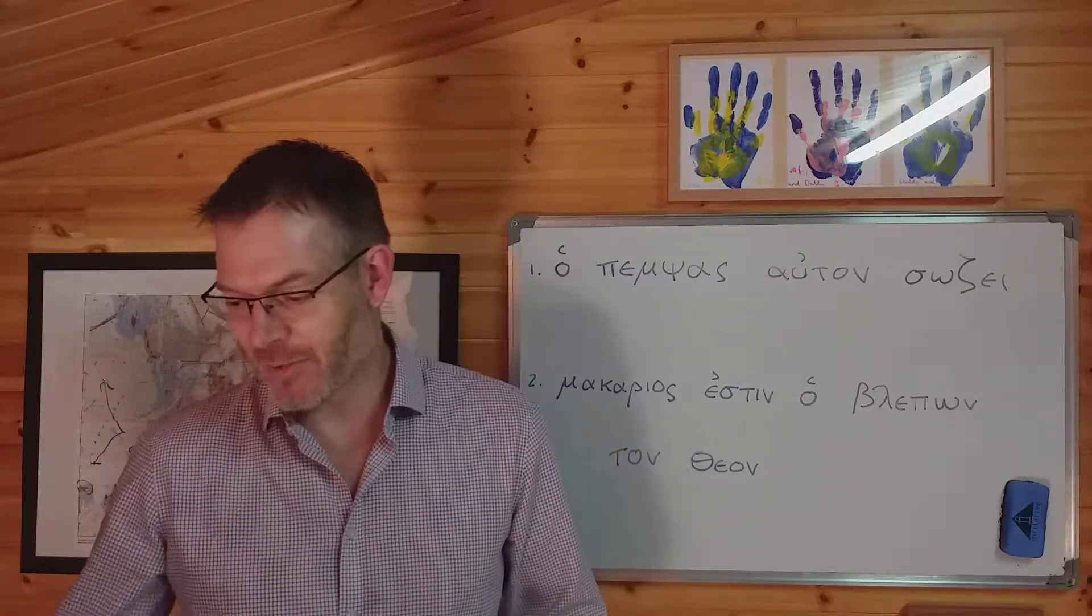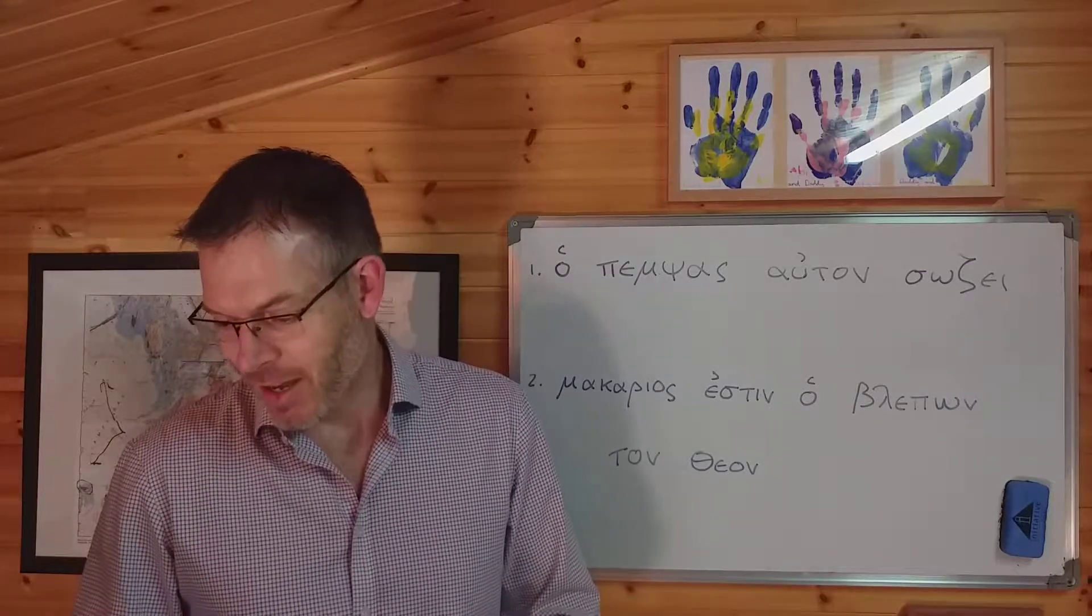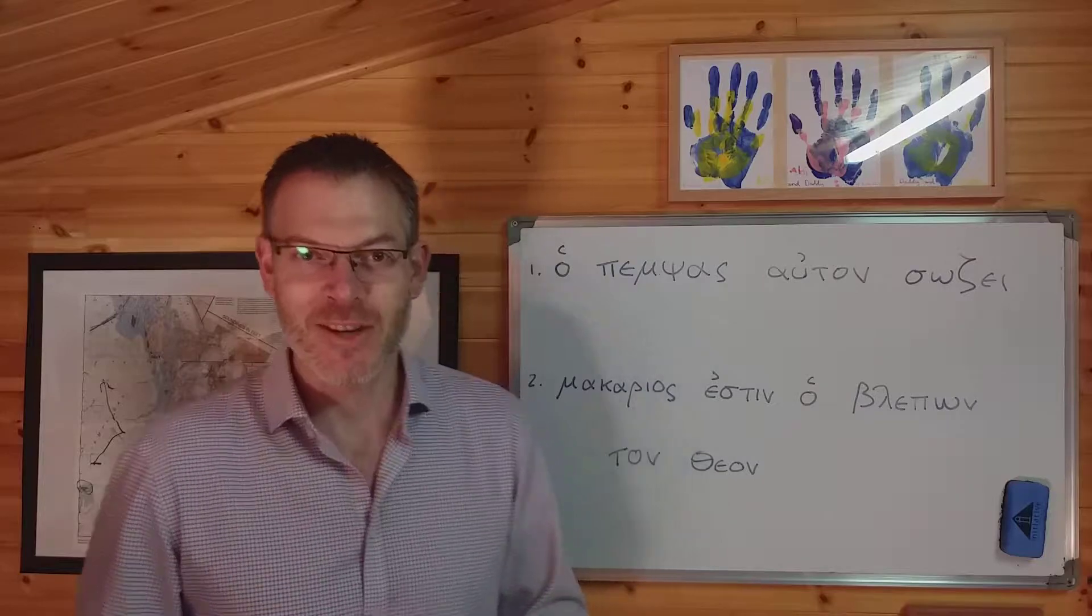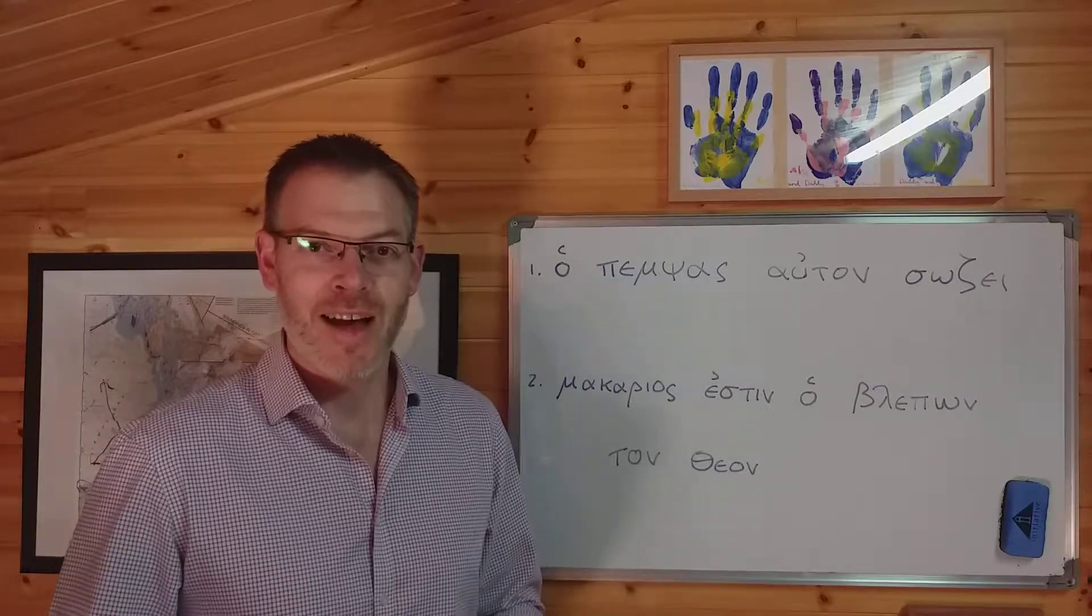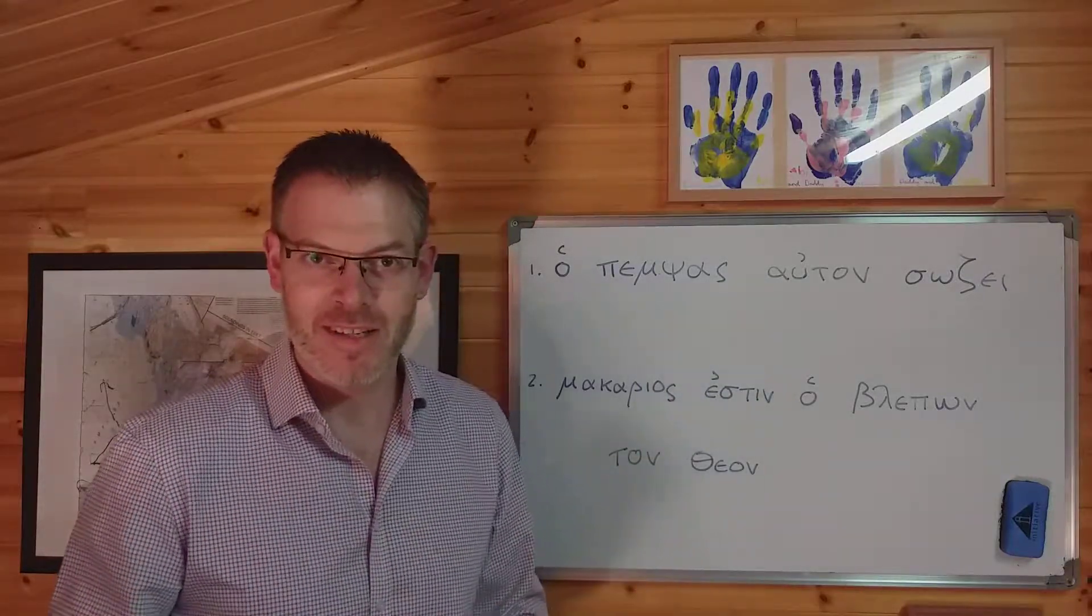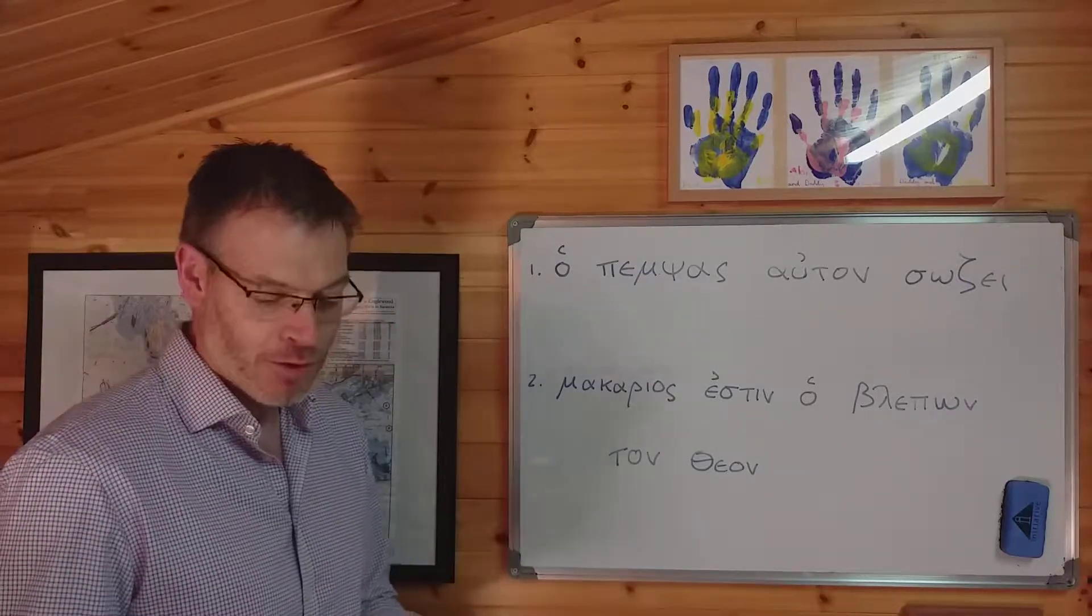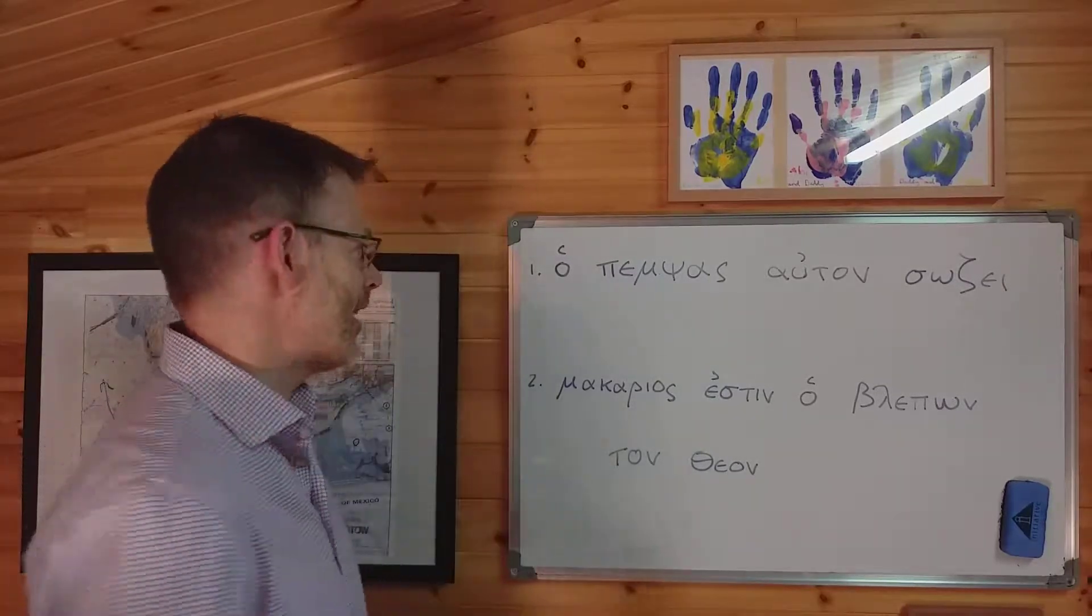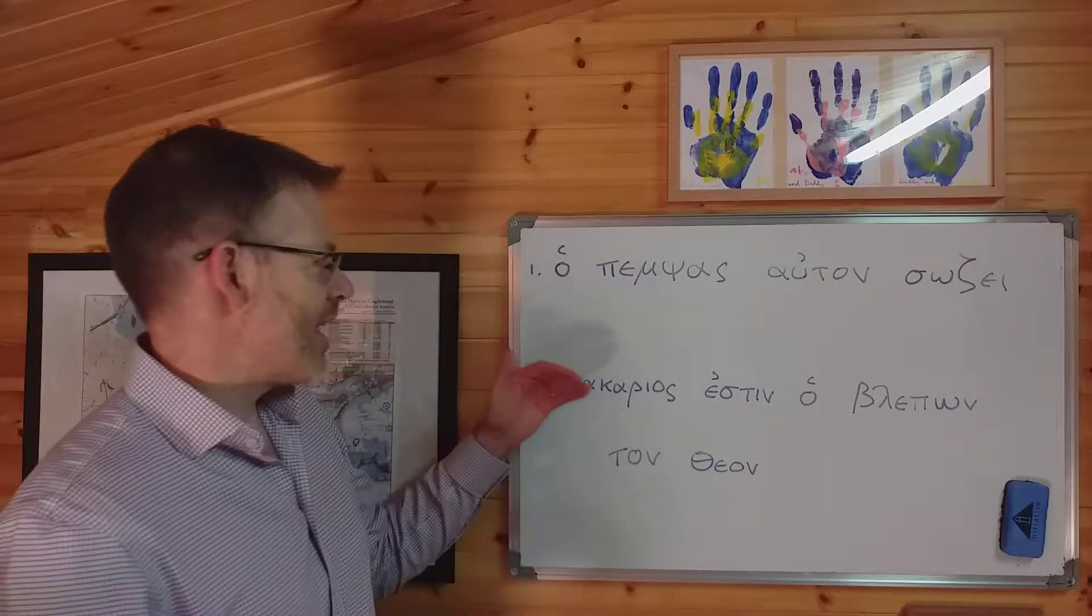That's what Duff explains here, and he gives you a couple of examples. The sower, the person who is sowing. The other example he gives, those who have heard, the having heard ones. In both those instances, what you're doing is simply adding an article to the participle to turn it into a phrase which means the ones who are doing this action denoted by the participle. The best way to explain it is just to look at a couple of these examples. Let's look then first at number one: ha pempsas auton soze.